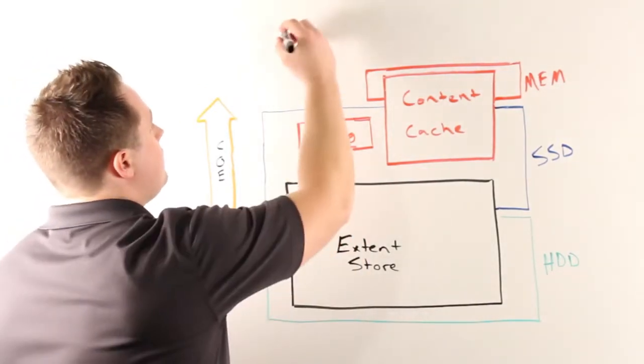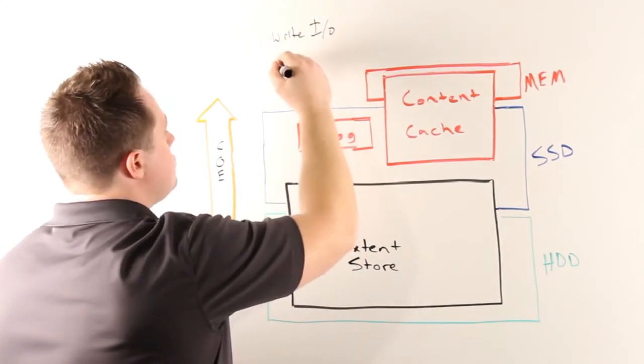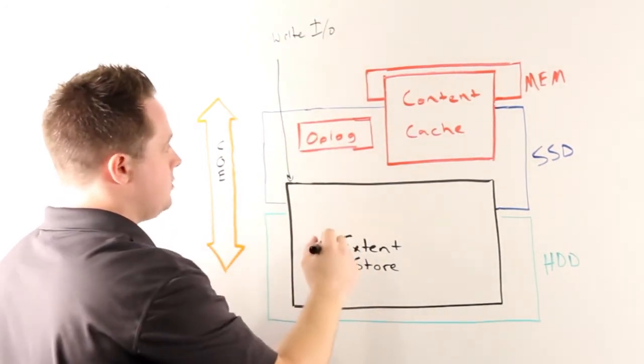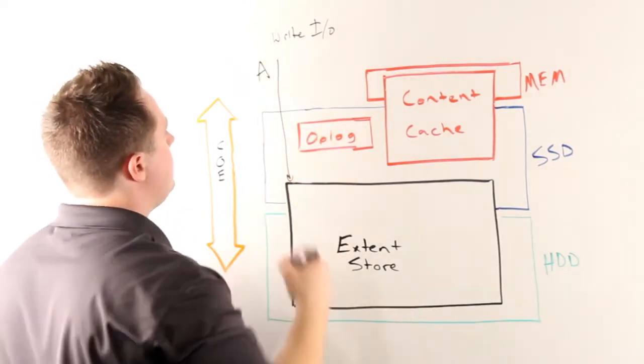If I have my write I/Os come in, any large or sequential I/Os will directly go to my extent store. As an example, we'll call this A.